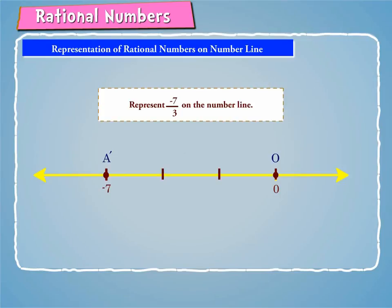Now divide OA' into 3 equal parts at P' and Q'. The point P' represents the rational number minus 7 by 3.